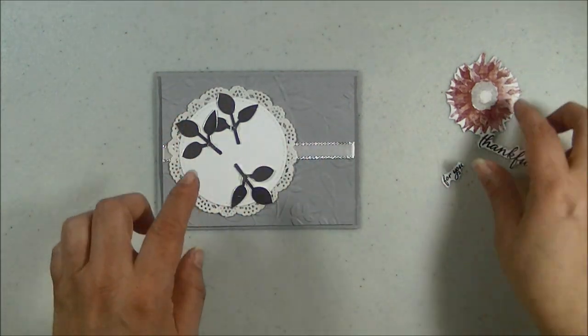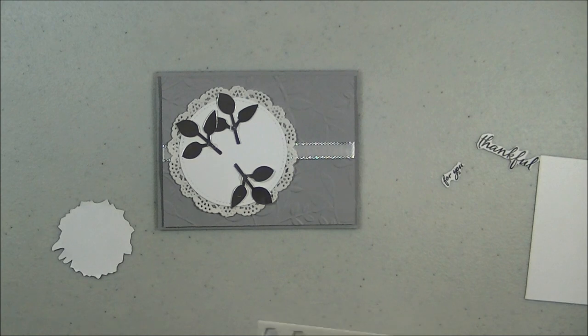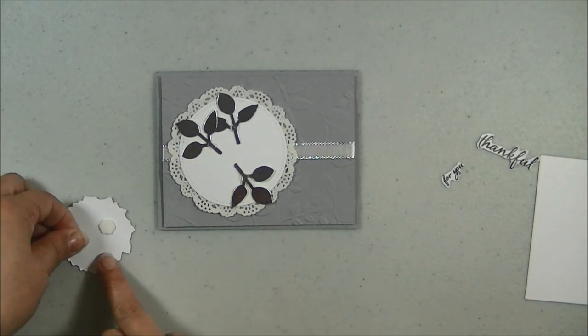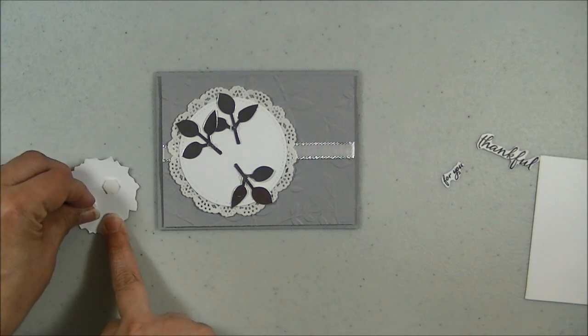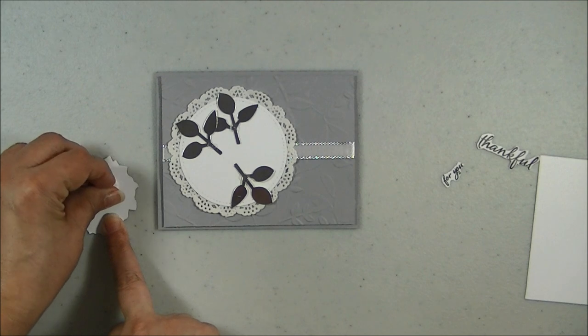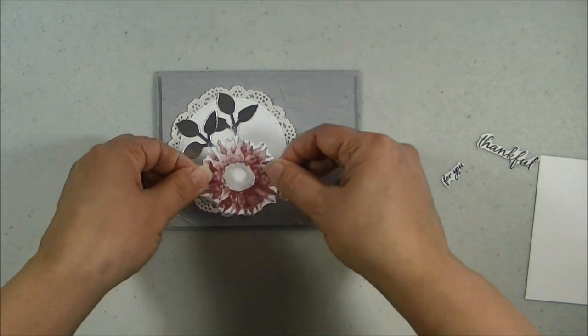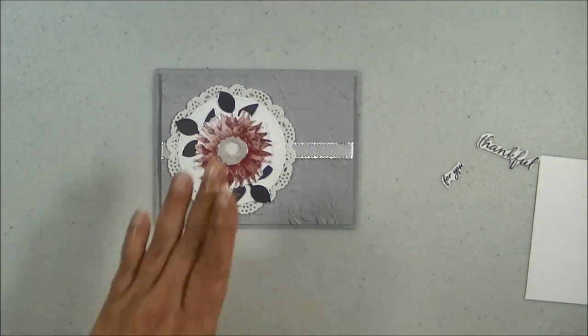And I know where I want them because I have already made this card. So that is kind of easy for me. Then I am going to put a couple of Dimensionals back here. Like so. And take the backing off. Like so. I am going to mount this right there.